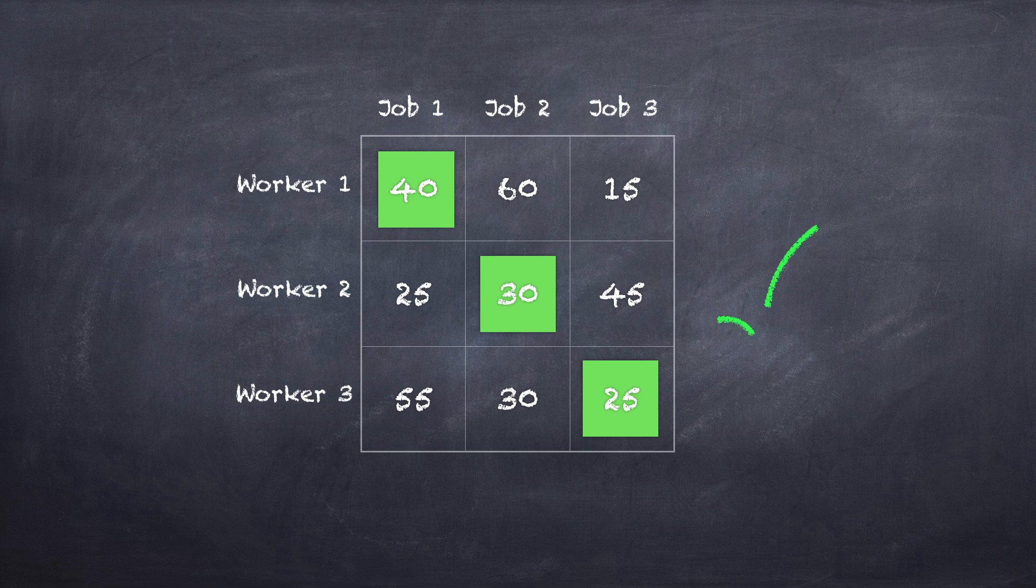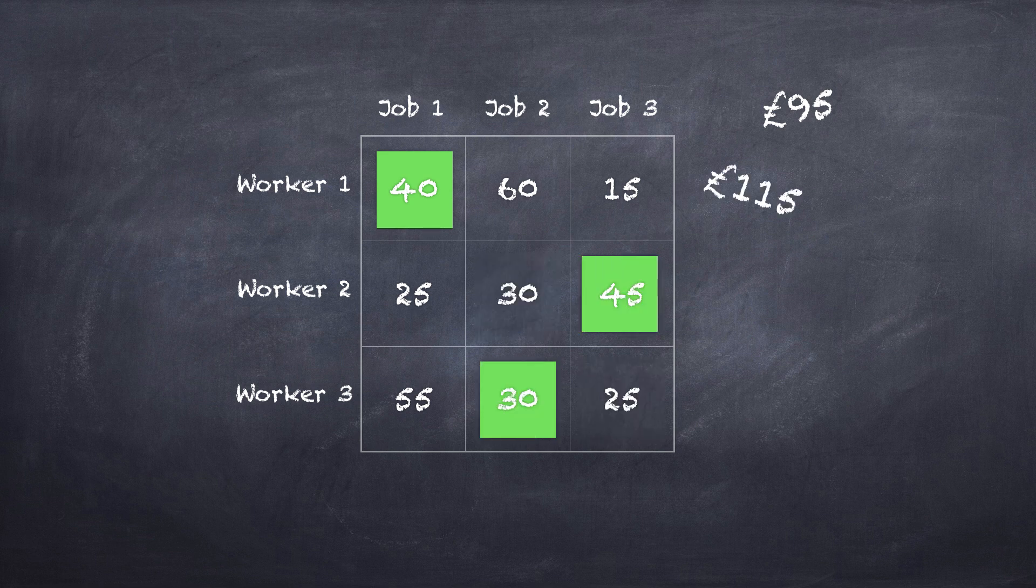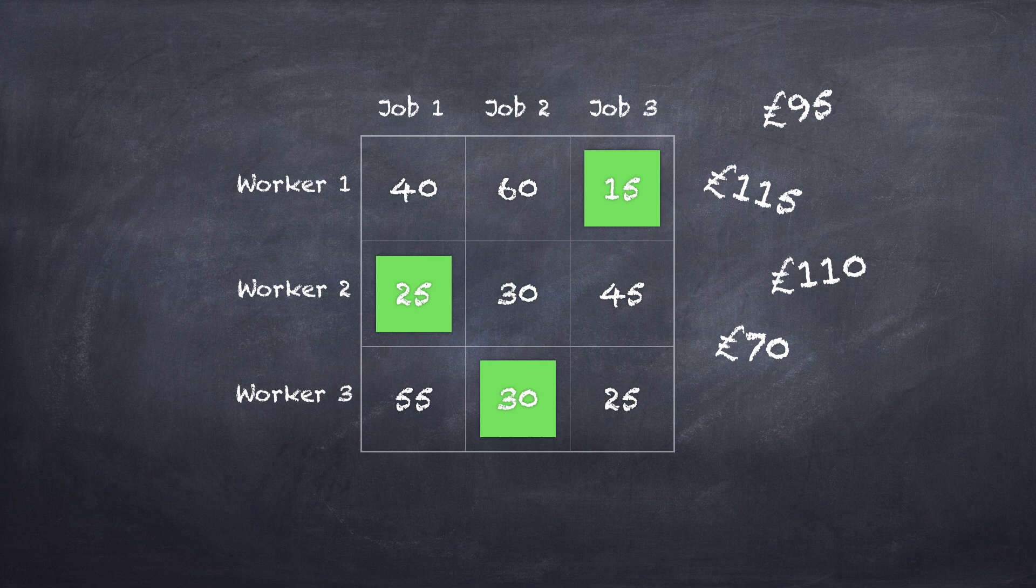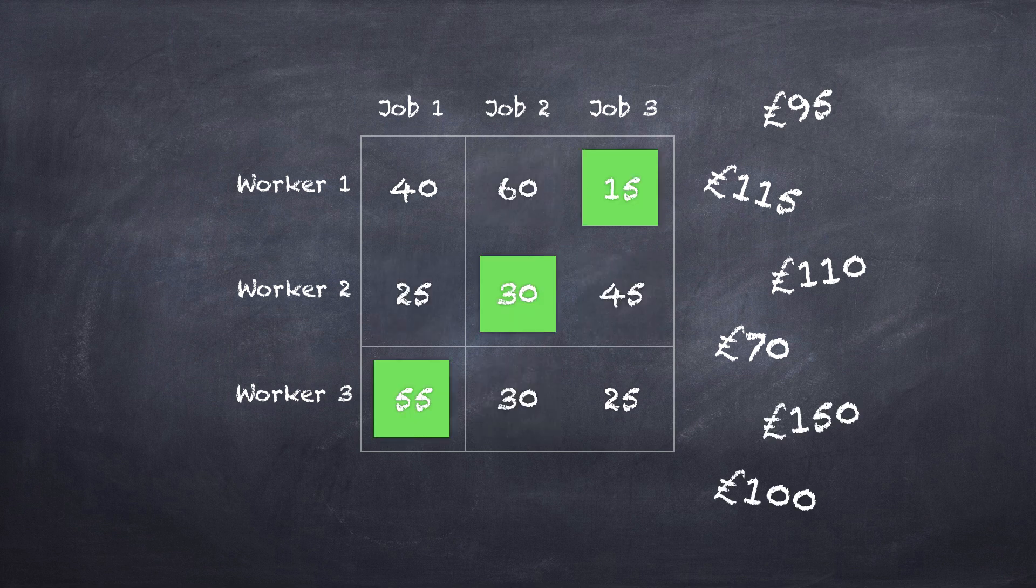This is a correct assignment. Here we can add all the costs and get the overall travel cost: £95. Here is another assignment. This assignment is £115. If we calculate the cost of all six iterations, we can find the assignment which produces the minimal overall cost, the optimal solution.